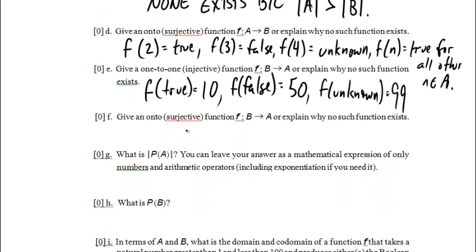Give a surjective function mapping from B to A, or explain why no such function exists. This is kind of the same as the question about an injective function from A to B. To get from B to A and make that surjective, we've got to cover everything in A, but there's almost 100 elements in A and there's only three elements in B, so we don't have enough. So none exists because the cardinality of B is less than the cardinality of A.